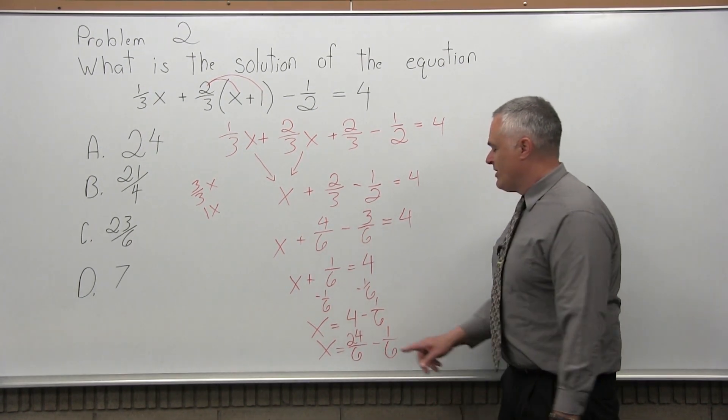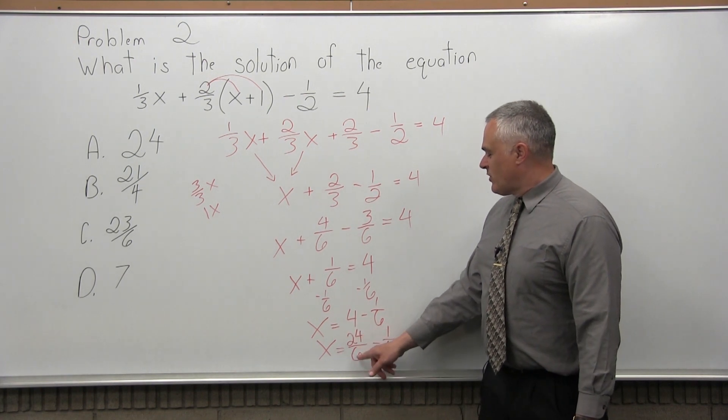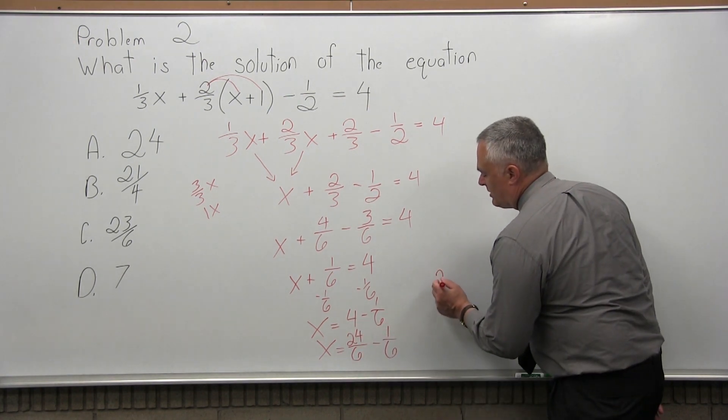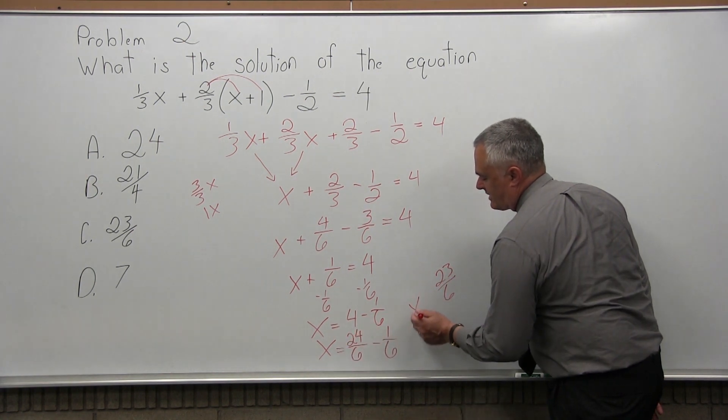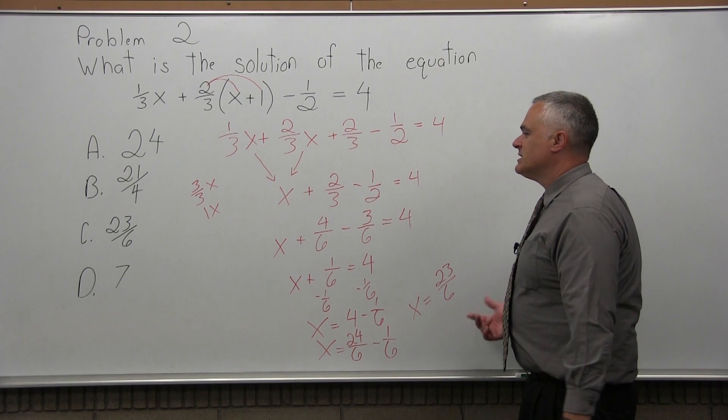I want something over 6. The numerator would have to be 24. 24 over 6 will reduce back to 4. That's still a 4. It's just a funny-looking 4. And I have minus 1 over 6. So, now, I have the same denominator. 24 over 6 minus 1 over 6. That will be 23 over 6. And on the other side of the equals, I have x. So, x equals 23 over 6.